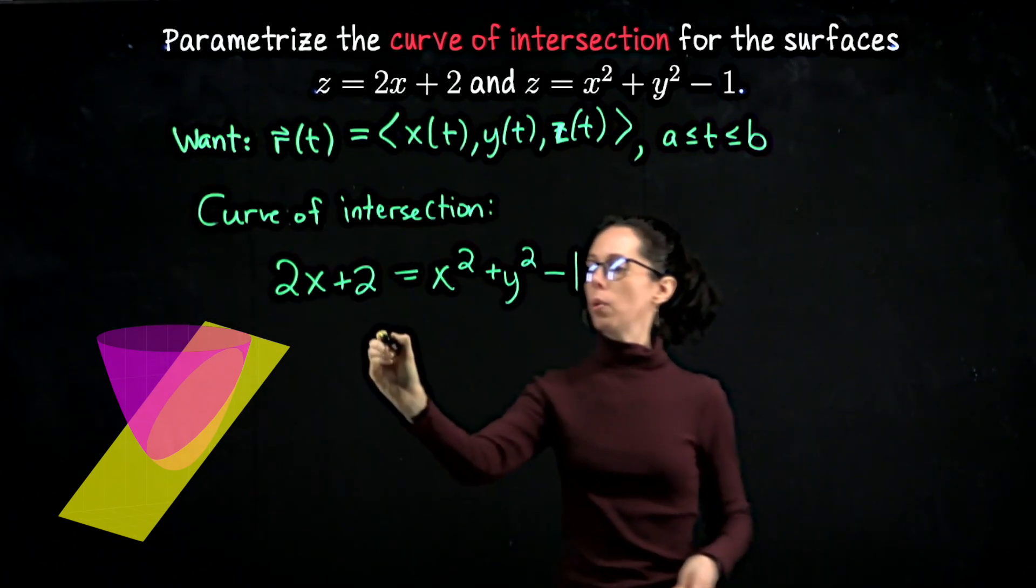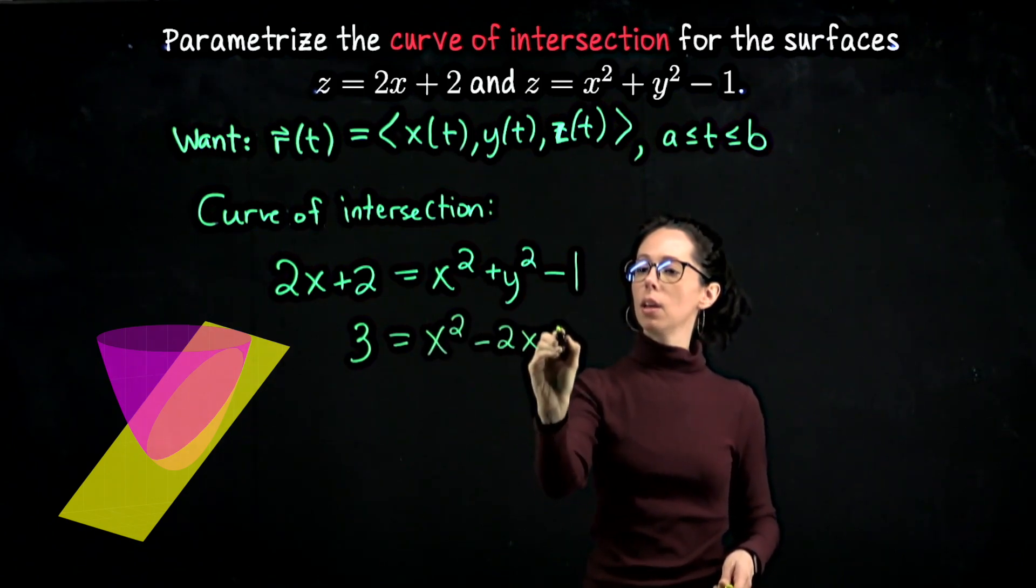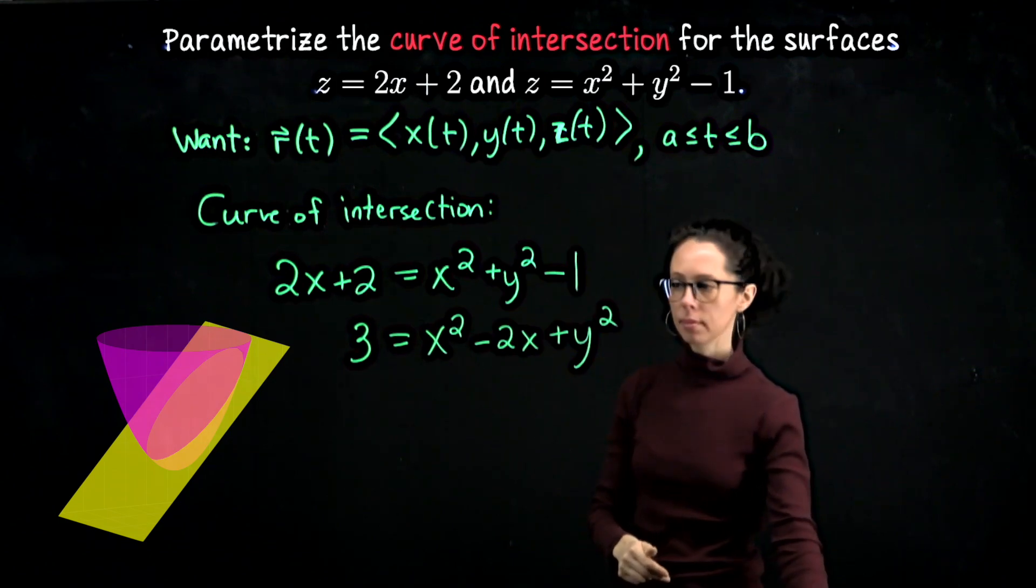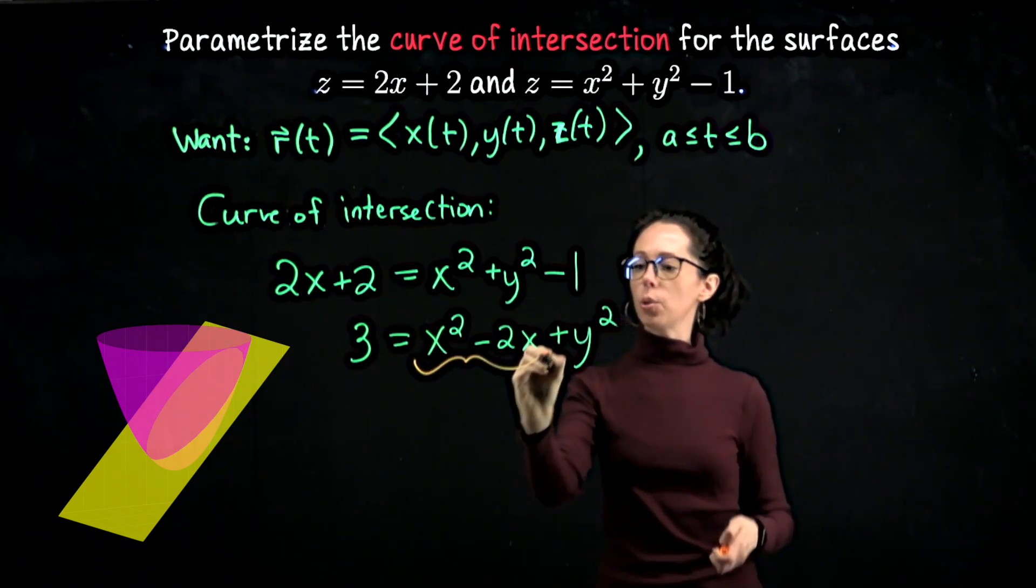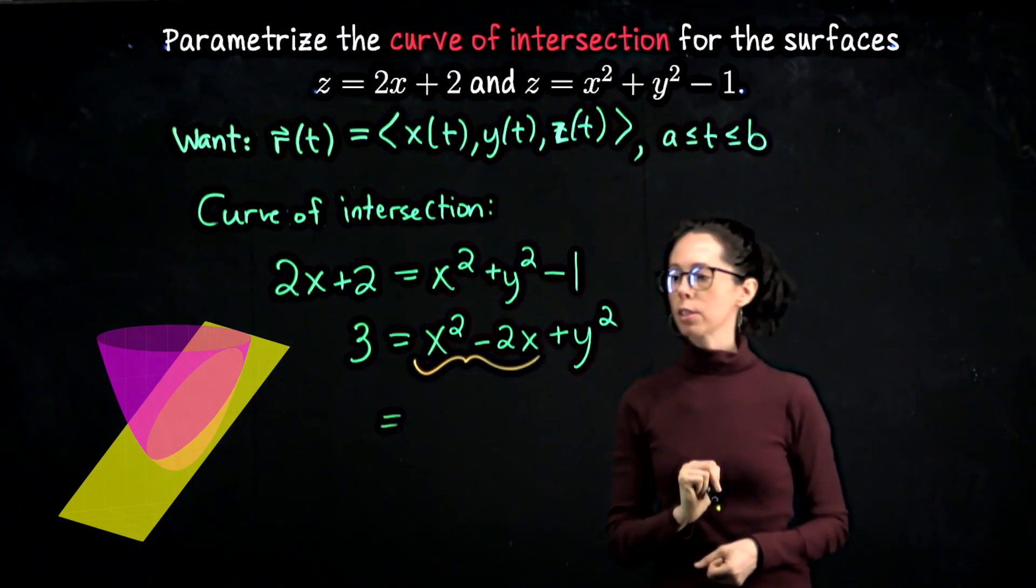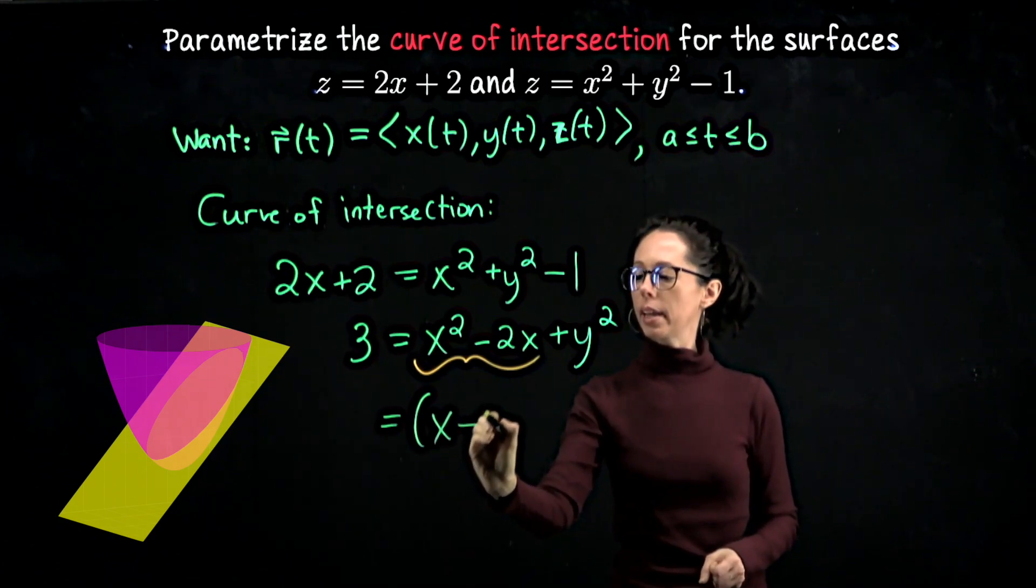So let me bring this constant over here. We'll write 3 equals x squared minus 2x plus y squared. Let's take the x squared minus 2x and do the process of completing the square on this expression in x. Take the negative 2, divide by 2, you get negative 1.